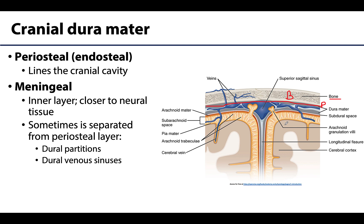The meningeal layer is the deeper, more inner layer of the dura mater; this is going to be closer to the neural tissue and closely applied to the arachnoid mater. In certain areas the meningeal layer will actually reflect inward, creating what's referred to as dural partitions or dural infoldings, and we will discuss this in quite a bit more detail in the next slide.